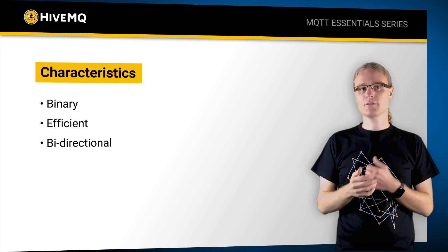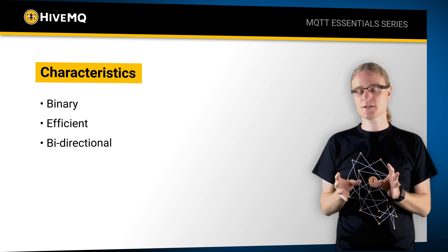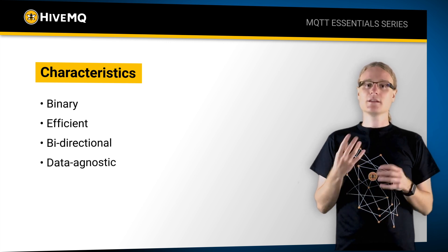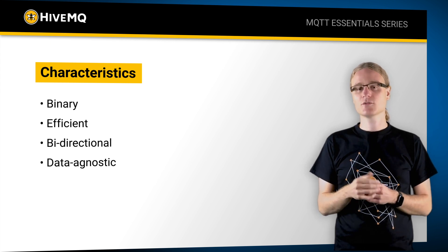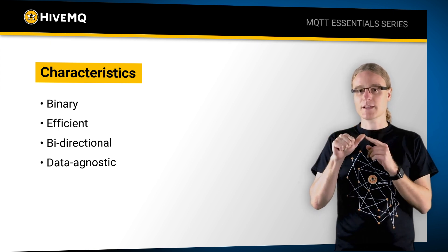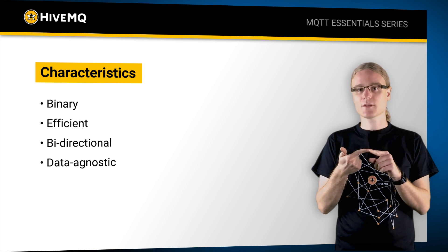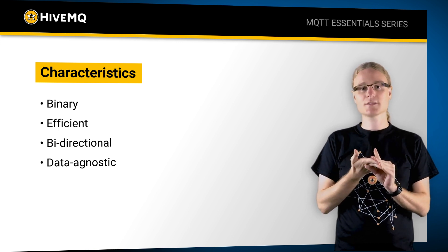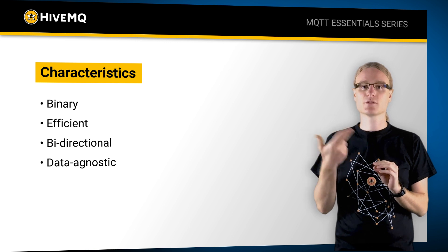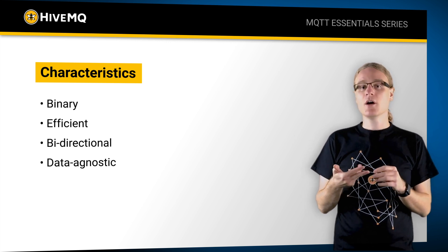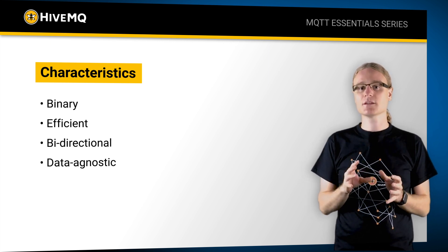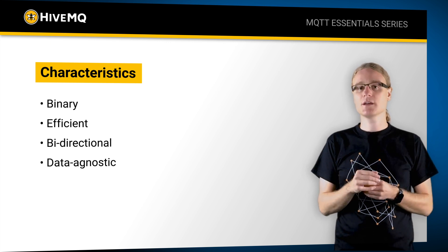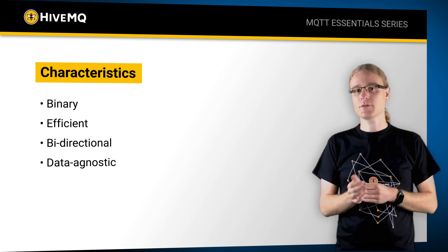The fourth characteristic is it's data agnostic. Data agnosticity means the protocol does not care what you're sending over it. You can send XML files, JSON files, your own custom data format for your application, or things like Google Protocol Buffers. Users are even using this for sending pictures or sometimes video fragments over MQTT.